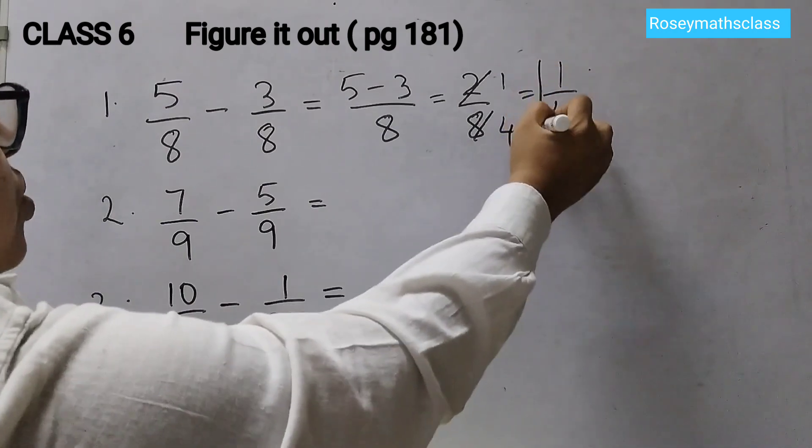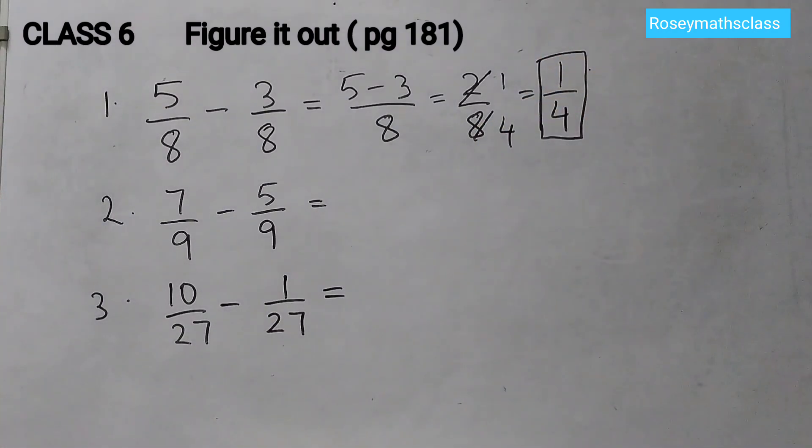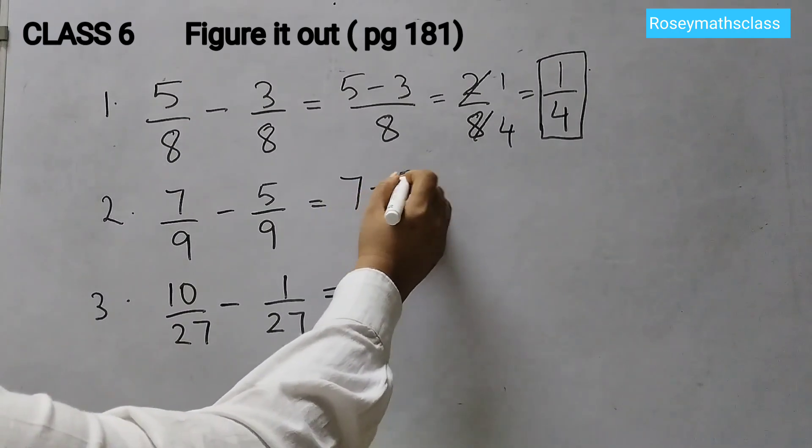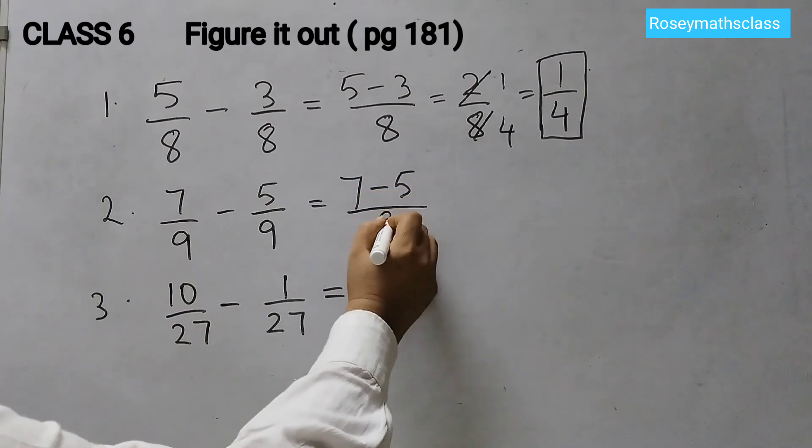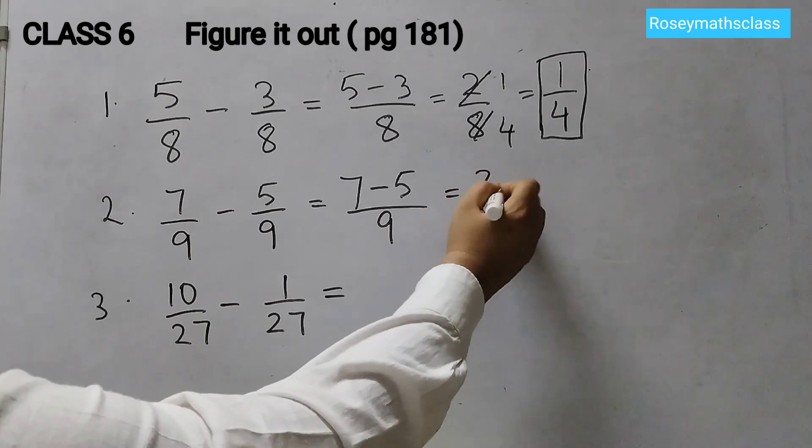So the answer would be 1 upon 4. Okay, next one: 7 upon 9 minus 5 upon 9. Same thing you have to do. 7 minus 5 divided by 9. 7 minus 5 is 2, correct.